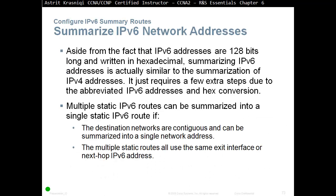Summarizing IPv6 network addresses — aside from the fact that IPv6 addresses are 128 bits long and written in hexadecimal, summarizing IPv6 addresses is actually similar to IPv4. It just requires a few extra steps due to abbreviated IPv6 addresses and hex conversion. Multiple static IPv6 routes can be summarized into a single static IPv6 route if the destination networks are contiguous and can be summarized into a single network address, and all use the same exit interface or next-hop IPv6 address.